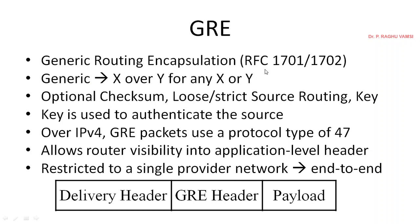In Generic Routing Encapsulation (GRE), defined under RFC 2701 and 2702, any generic protocol over any generic carrier can be established. It has an optional checksum, loose or strict source routing, and keys for establishing a secure tunnel. It is used to authenticate the source. Over IPv4, GRE packets use protocol type 47. It allows router visibility into application-level headers and is restricted to a single provider network. The packet structure consists of a delivery header, a GRE header, and the payload — the original data.